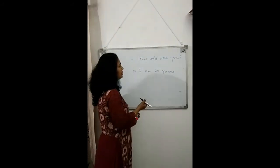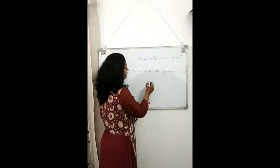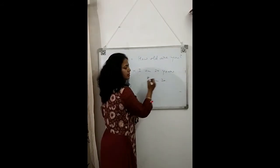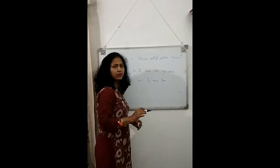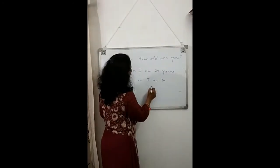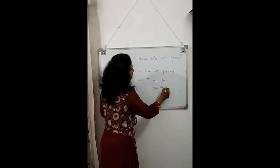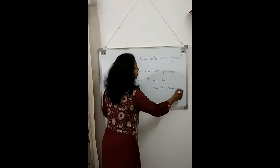To tell the age, you can use: 'I am 20.' This one is correct. Or you need to say: 'I am 20 years old.'